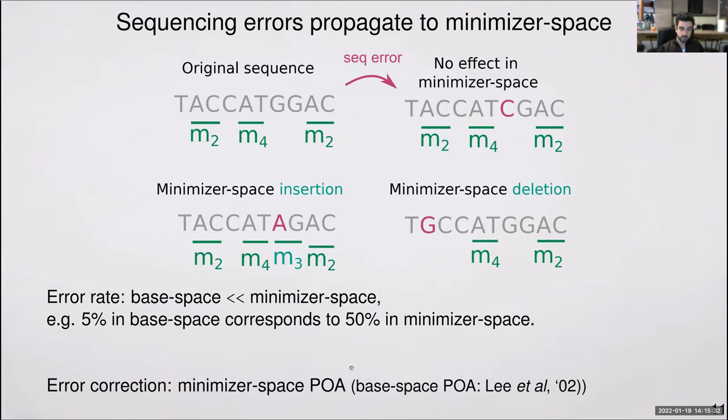We implemented, and I should give full credit to Barish for doing this, implemented error correction in minimizer space using partial order alignment, which is an equivalent to the base space POA that has been used for performing error correction of long reads for a long time. By doing this, we can reduce the error rate in minimizer space. We could handle reads up to 4% base pair error rate. Higher than this, for instance 5% base base error rate, is too much and hard to correct.